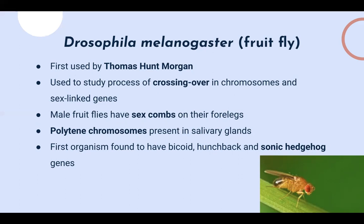Some other clues about fruit flies: male fruit flies have sex combs on their forelegs. Important mutants include ebony, eyeless, Antennapedia, and dumpy. In fruit fly larvae, polytene chromosomes are found in their salivary glands, which are an important research tool because they're easily removable and can be easily studied in the lab.